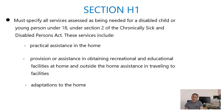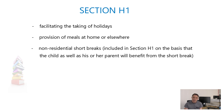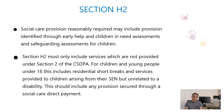Section H is divided into two parts: section H1 and section H2. Section H1 essentially identifies all the services to be provided by social care under the Chronically Sick and Disabled Persons Act. In practice, this looks like practical assistance in the home, support to access recreational or educational facilities outside of school, adaptations to the home, respite for holidays, and short breaks — that's often what you'll find in section H1 where social care has identified a need following a social care assessment.